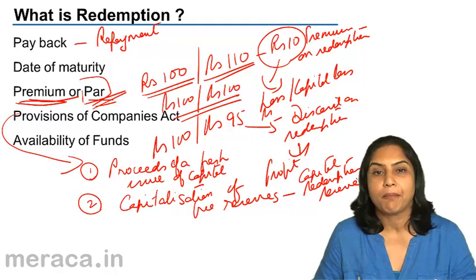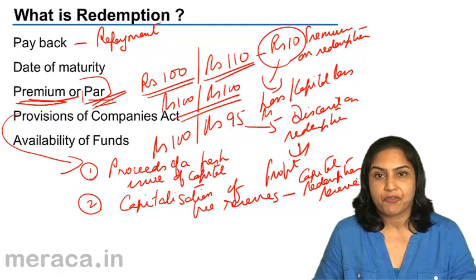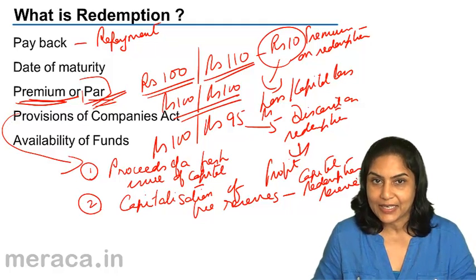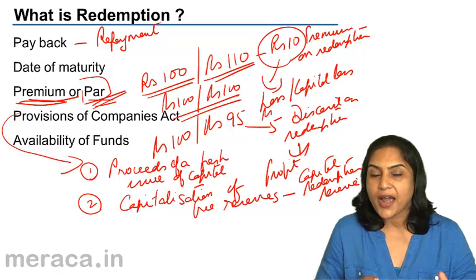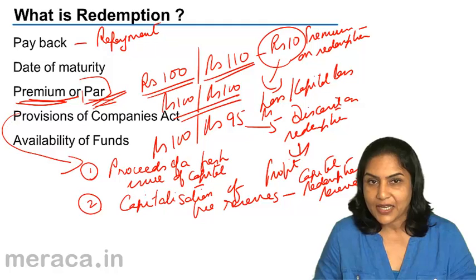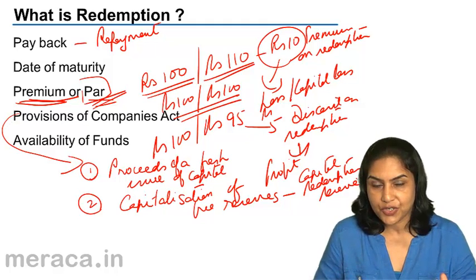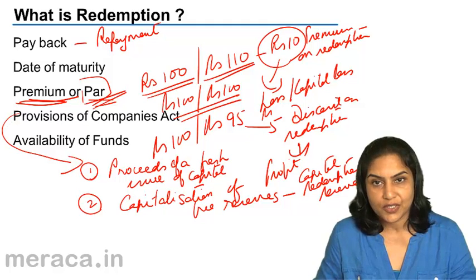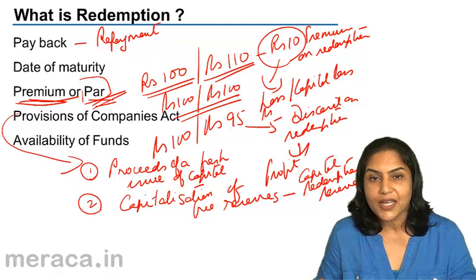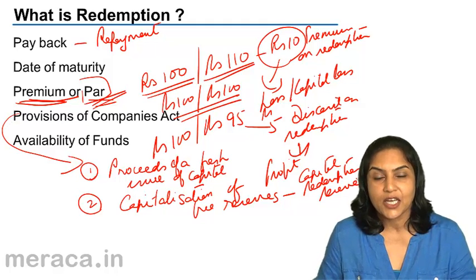Usually these are the ways in which money is raised to repay preference shareholders. So there are two aspects to redemption: one is the provisions of the Companies Act, where redemption can be carried out either out of the proceeds of a fresh issue or out of capitalization of reserves — this says do not disturb the capital structure. The other aspect is to ensure there are sufficient funds to repay the preference shareholders, which may require the company to issue equity shares, preference shares, debentures, or sell investments and other assets.